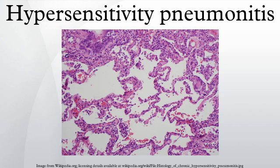Patients with subacute HP gradually develop a productive cough, dyspnea, fatigue, anorexia, weight loss, and pleurisy. Symptoms are similar to the acute form of the disease but are less severe and last longer. On chest radiographs, micronodular or reticular opacities are most prominent in mid to lower lung zones. Findings may be present in patients who have experienced repeated acute attacks.